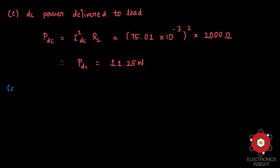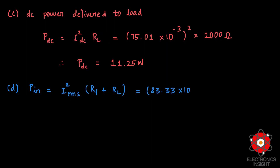Coming to the fourth subdivision, which is the input power to the circuit P_in, this equals I_rms squared times (R_f + R_L). Since I_rms was 83.33 milliamps, substituting the whole squared times R_f + R_L which is 3000 ohms, this gives us an input power of 20.83 watts.